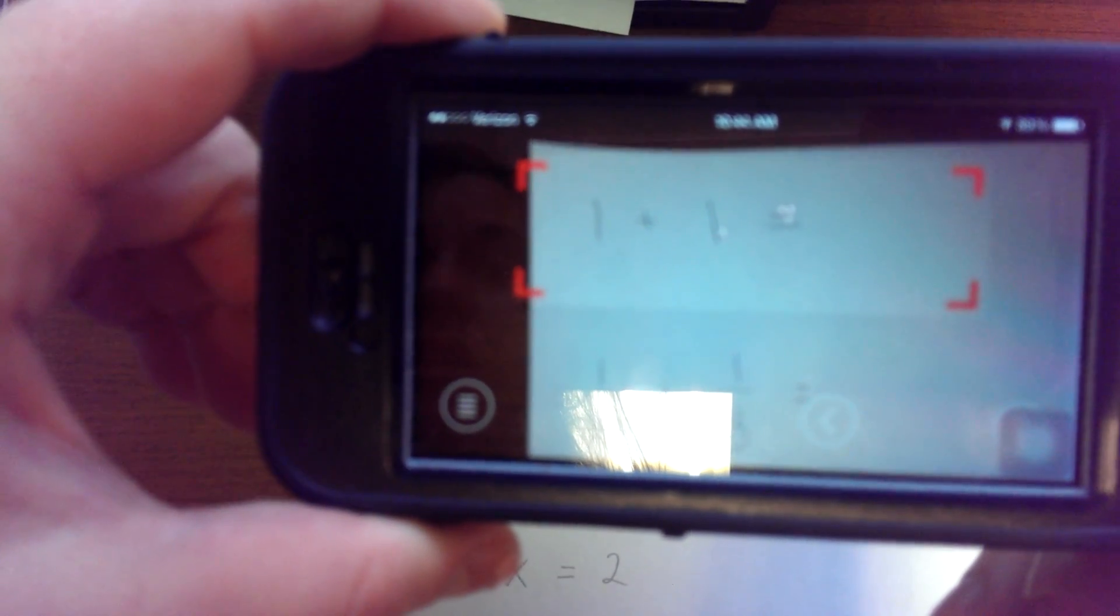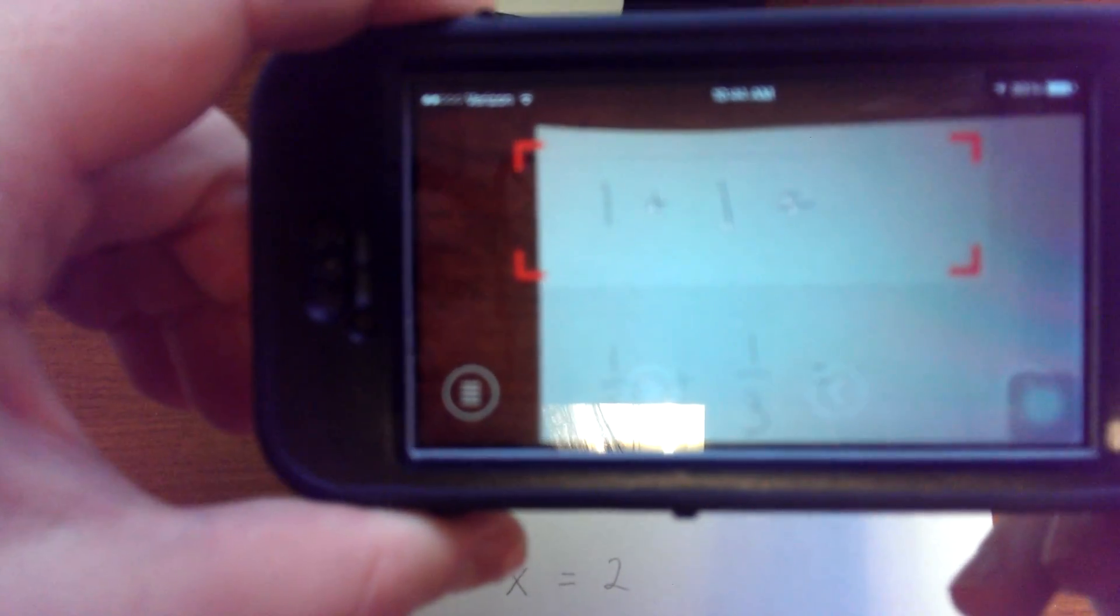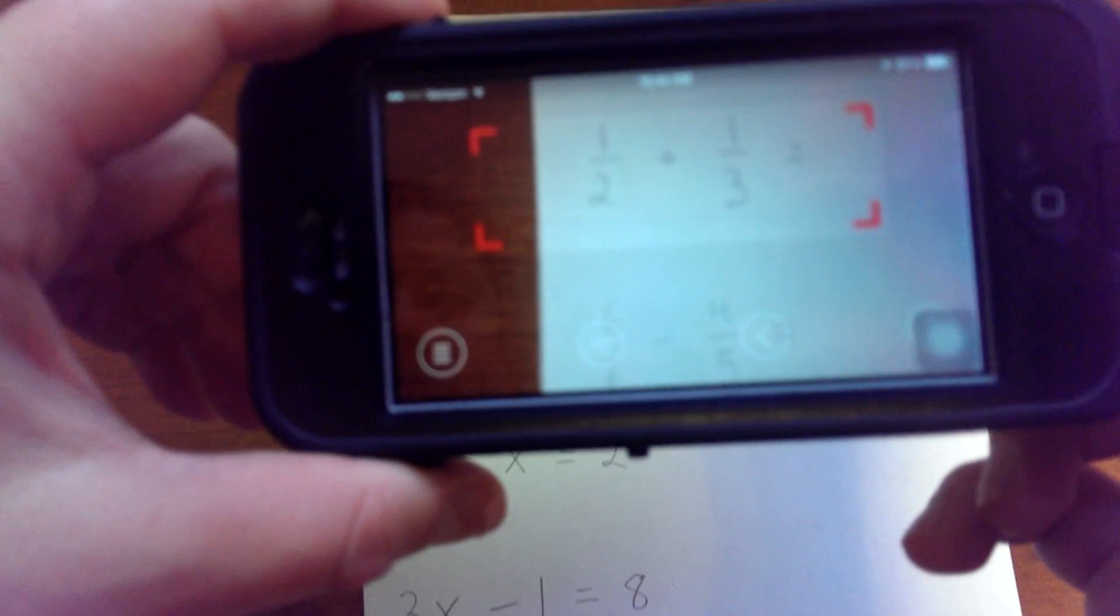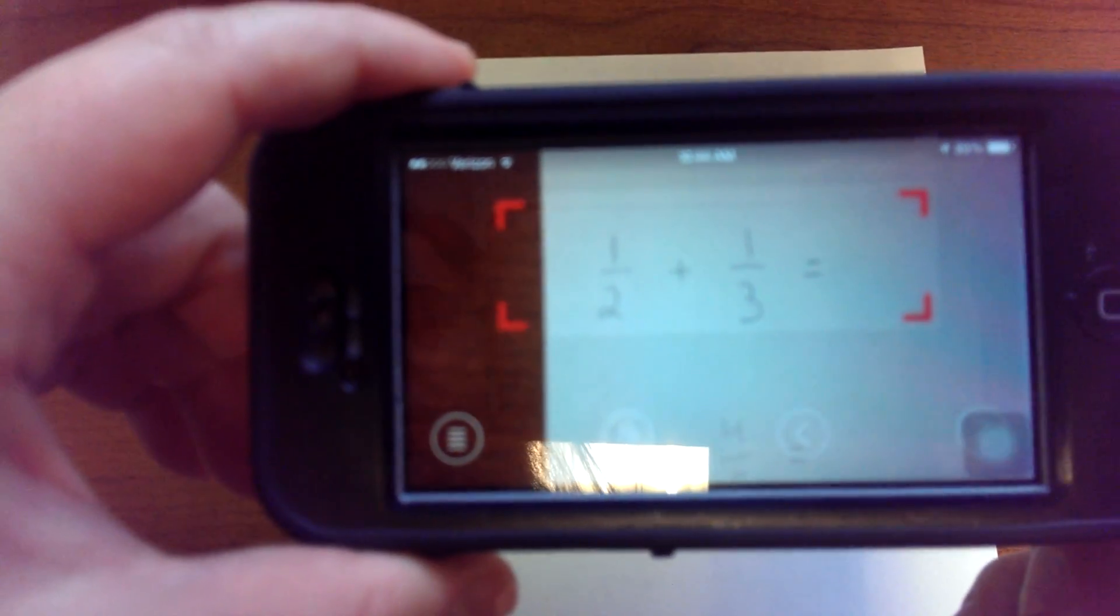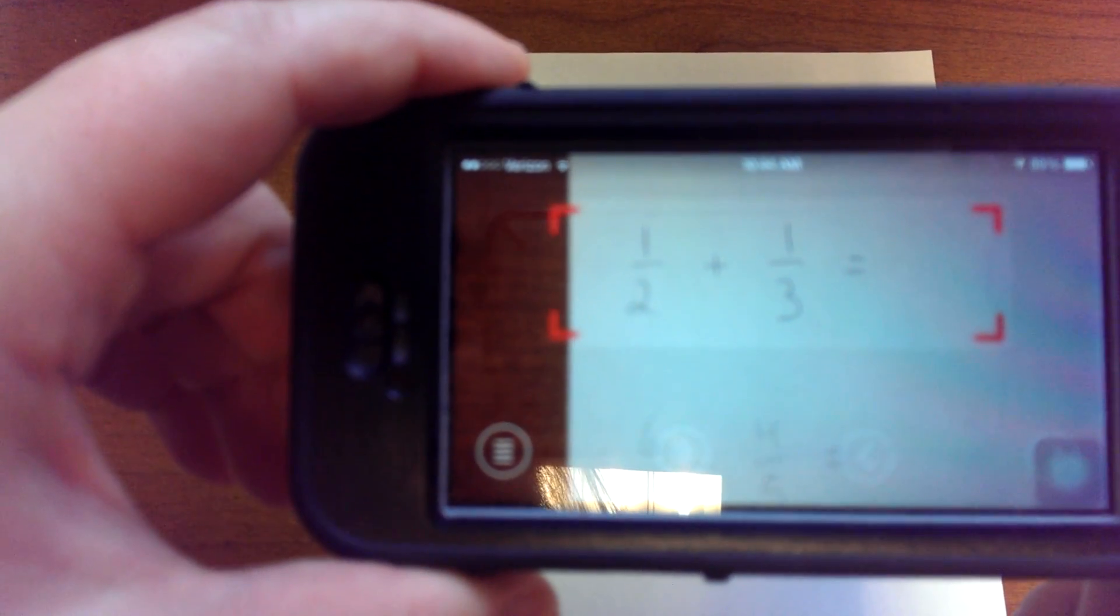I'll point out that Joe's handwriting is very clear and very nice. Maybe it'll do fractions. Because 1 plus 1 is a bit difficult. Fractions are easier than whole numbers. It's 1 half plus 1 third.